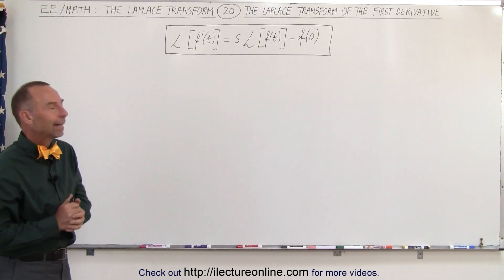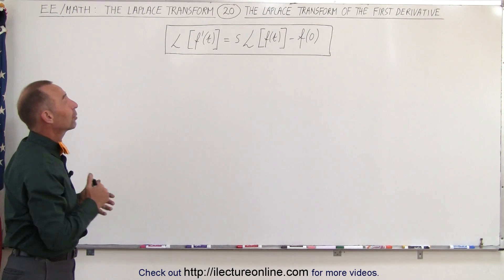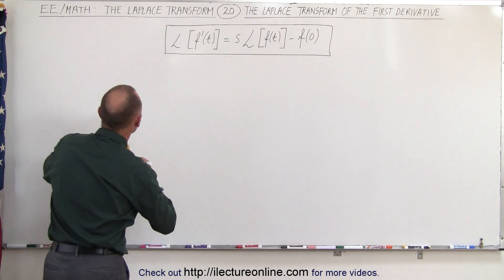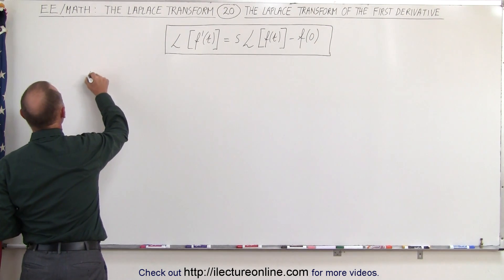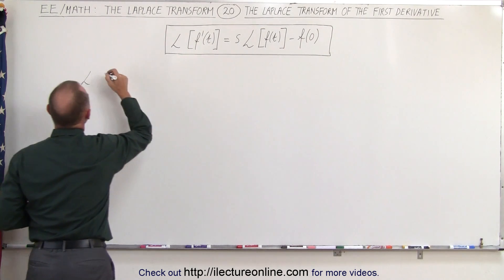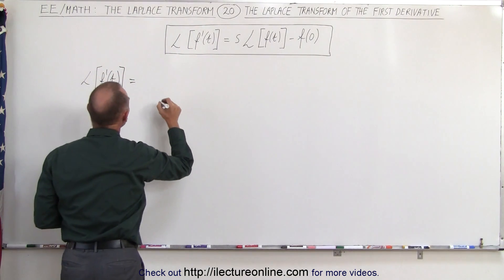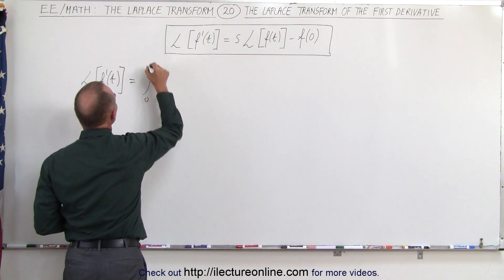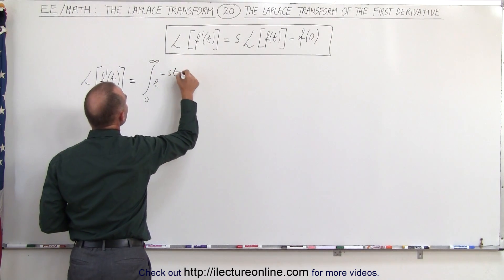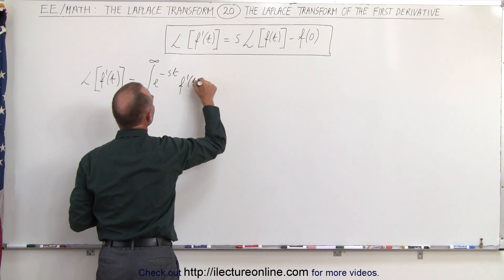We'll show you an example in a later video, but first we need to figure out how that equation is established. Let's start with the basic definition of the Laplace transform. We know that the Laplace transform of f prime of t can be written as the integral from zero to infinity of e to the minus st times the derivative f prime of t, dt.